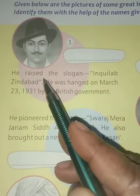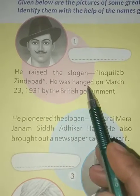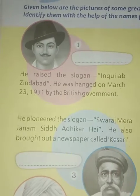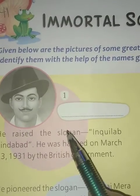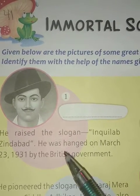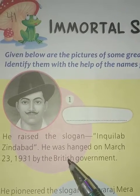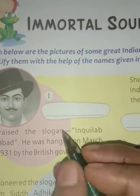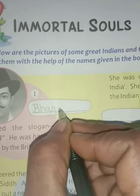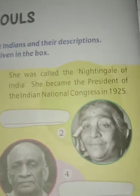First: He raised the slogan 'Inquilab Zindabad' and was hanged on March 23rd, 1931 by the British government. Bhagat Singh was born in Banga on September 27, 1907, into a Sikh family. The answer is Bhagat Singh.